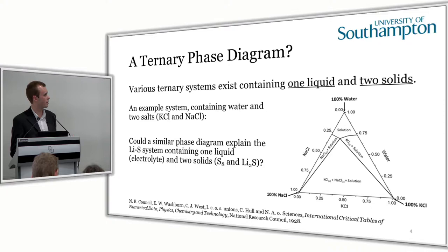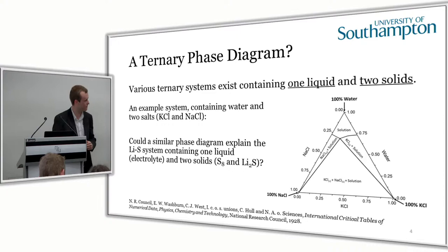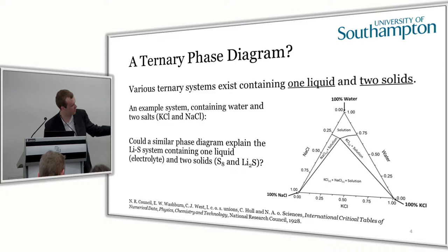There are various ternary systems that exist containing one liquid and two solids. I've got an example on the board containing water as the liquid and two salts — potassium chloride and sodium chloride. At each of the vertices we have one of the three components: 100% water at the top, 100% sodium chloride on the left, and 100% potassium chloride on the right. At the top we have a one-phase region where everything dissolves in solution. Either side we have two-phase regions where we have one solid present and the solution with the dissolved salt.